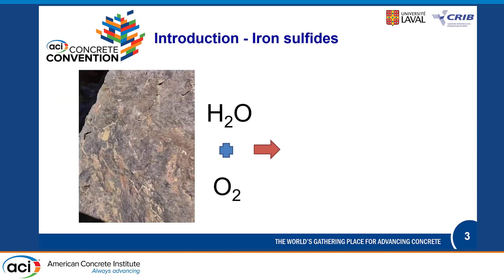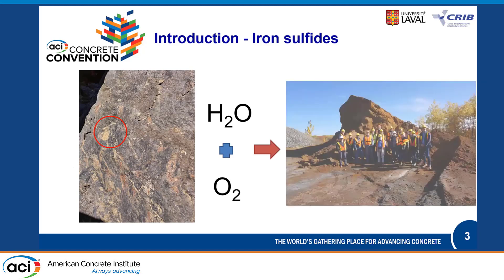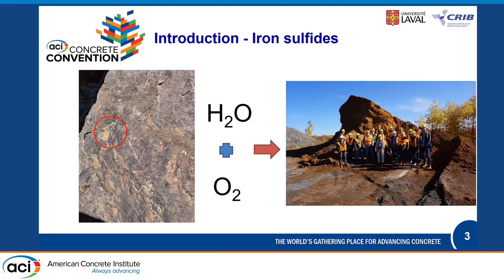Iron sulfates are minerals that can be found in different types of rocks and are composed mainly of iron and sulfur. They can appear in a golden or yellowish color, and when the rock is crushed it can end up in the aggregate. With water and oxygen, they can be oxidized — this is what we found in the quarry of Tuaribia in Quebec City, Canada.